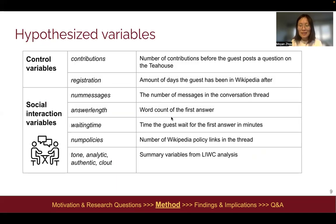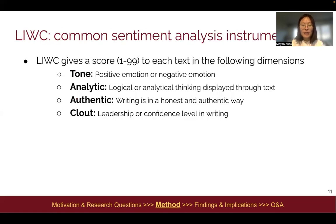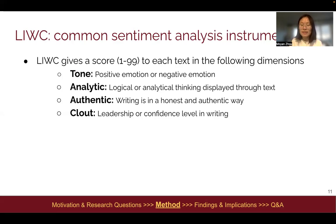We hypothesized some variables. LIWC is a commonly used sentiment analysis instrument, as it gives scores to each of the following summary variables. Tone shows the emotion, whether it is positive or negative. Analytic shows whether the writer has a more logical or analytical thinking style, and Authentic shows whether the writing is done in an honest or authentic way in self-presentation. Clout tells the leadership or confidence level in writing.